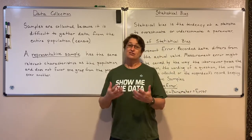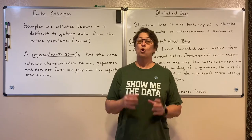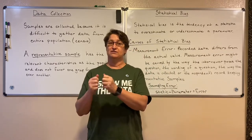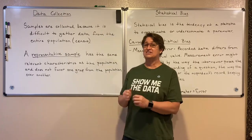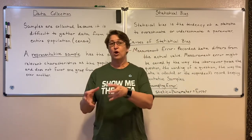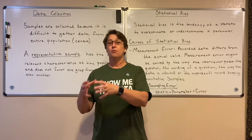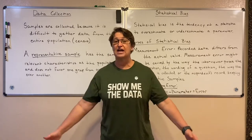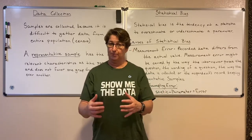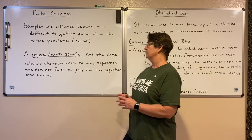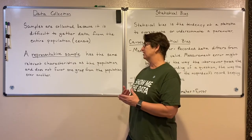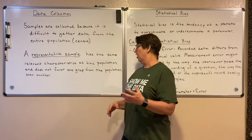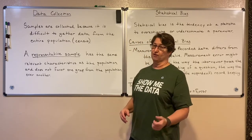But that sometimes causes problems. What we want when we gather a sample is a representative sample. We want to gather data from a part of the population that looks like the whole population. So a representative sample has the same relevant characteristics as the population, and it doesn't favor one group over another group of the population.